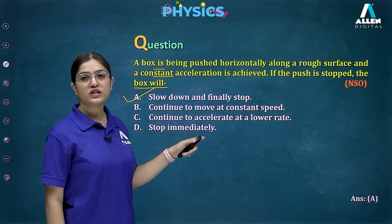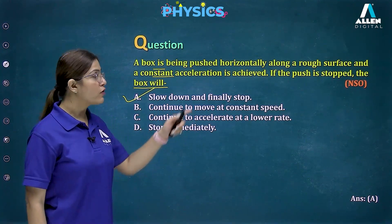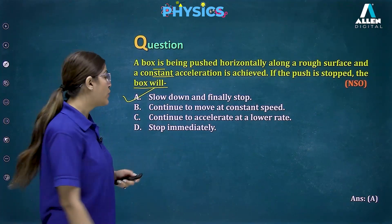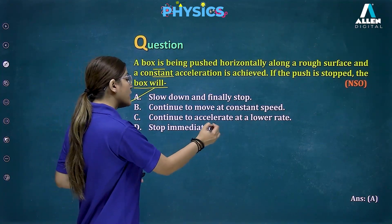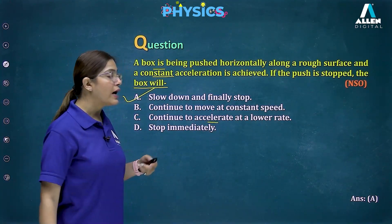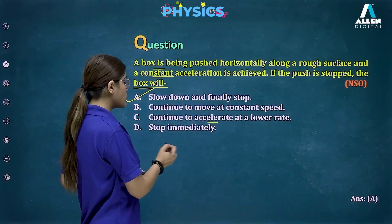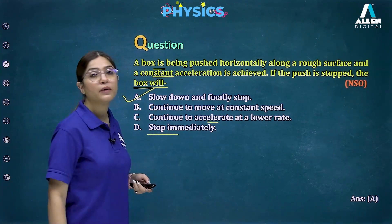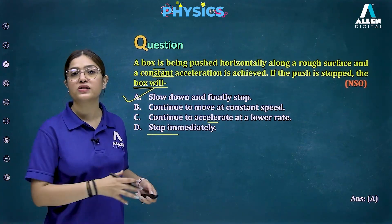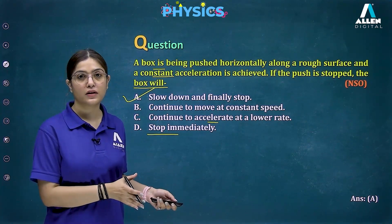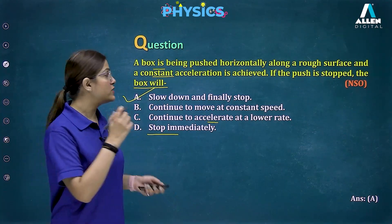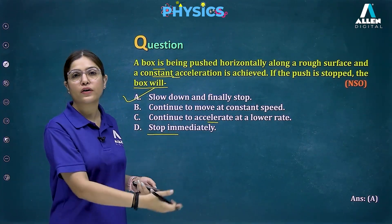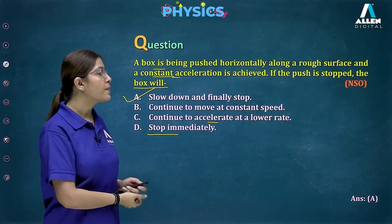The other options are incorrect: the box cannot continue at constant speed because no force is applied. It cannot accelerate at a lower rate since there's no driving force. It cannot stop immediately because it has momentum. The constant acceleration mentioned was while moving on the rough surface with the applied force.